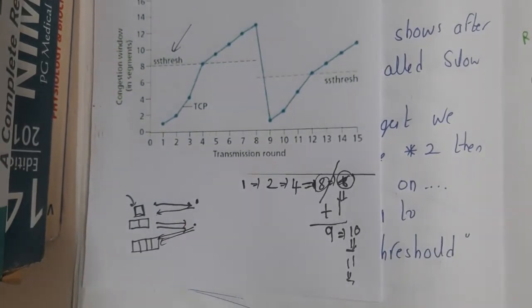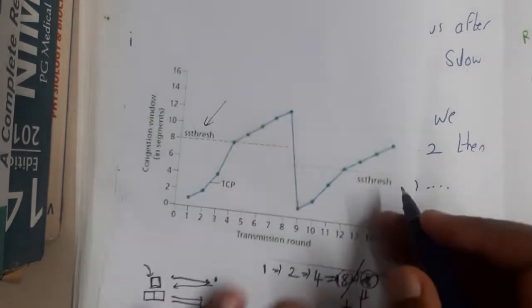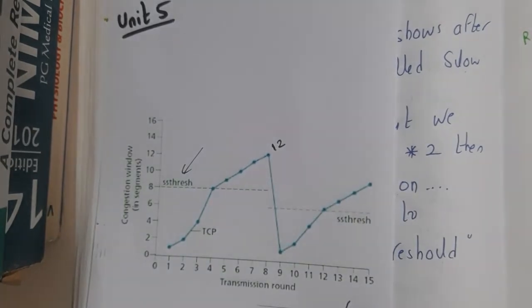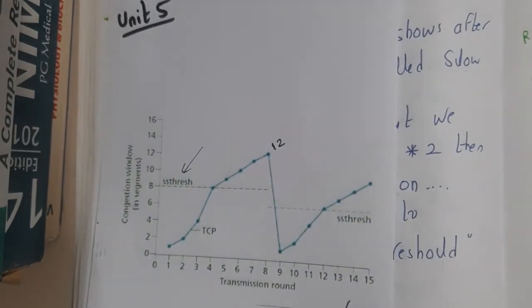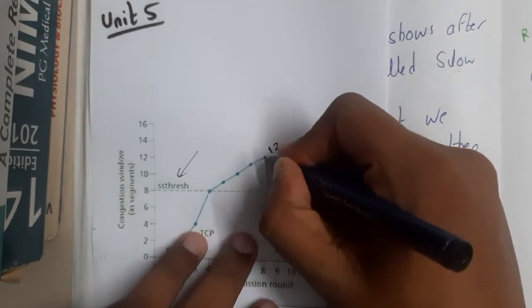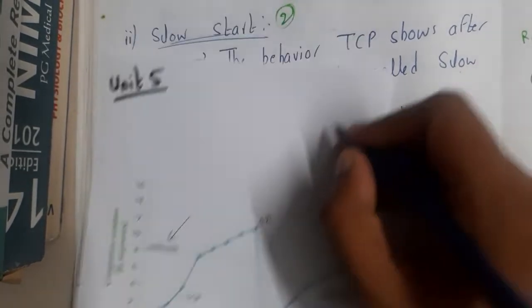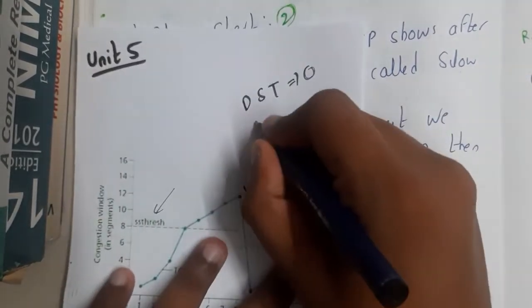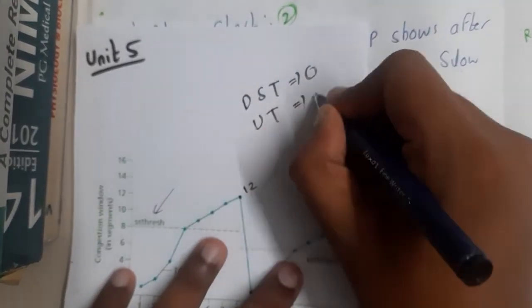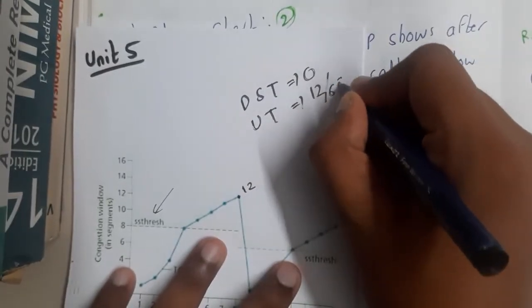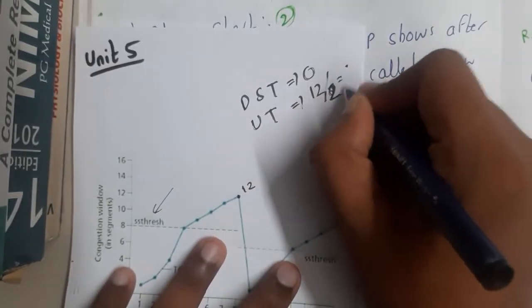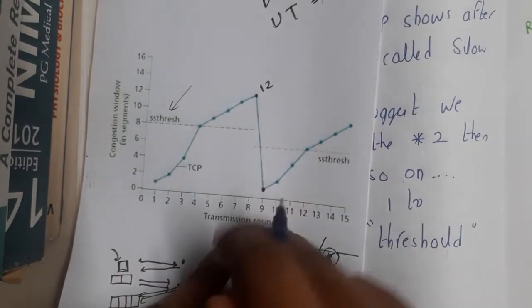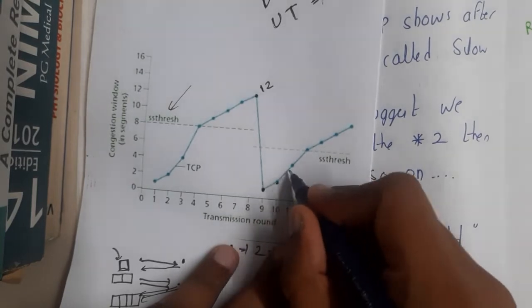You keep incrementing by one until there is congestion. Assume that at 12 you hit congestion — you don't get a reply from the receiver. In that situation you directly drop your speed to zero. The second step is to update the threshold to half of your current speed. Your speed was 12, so your new threshold becomes 6.